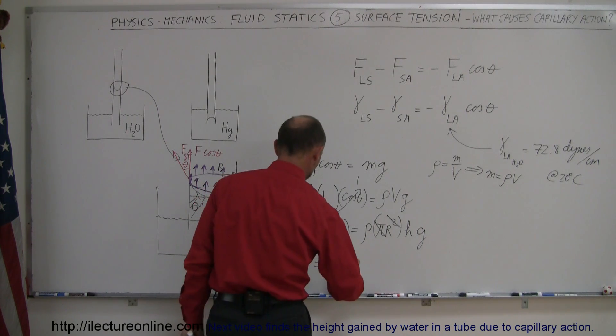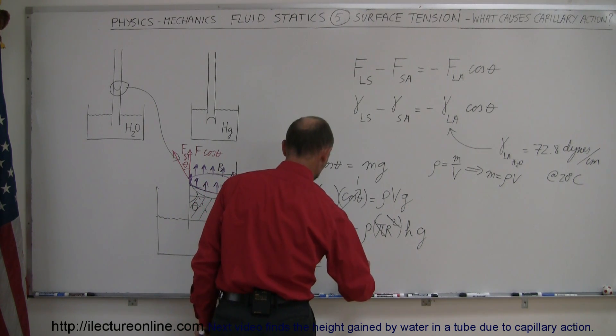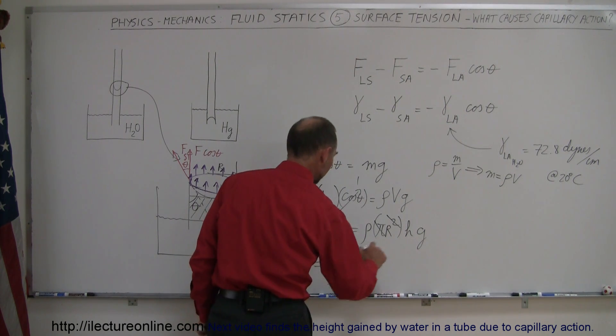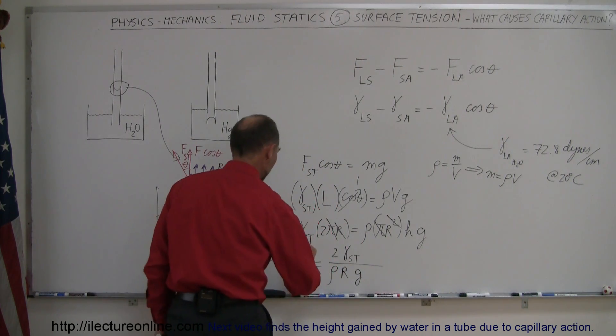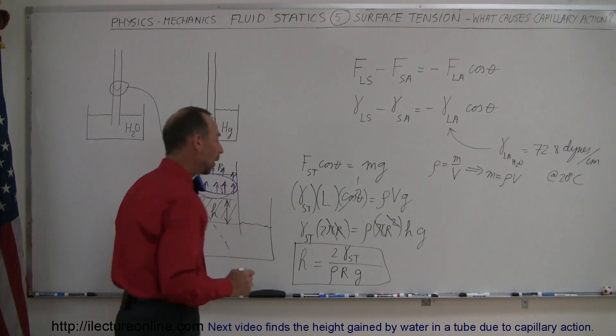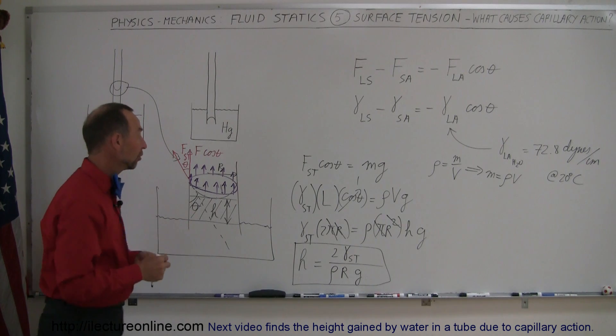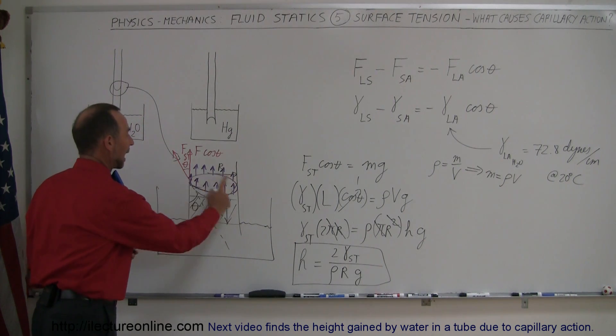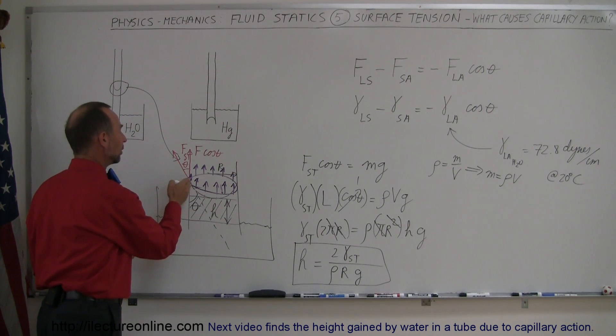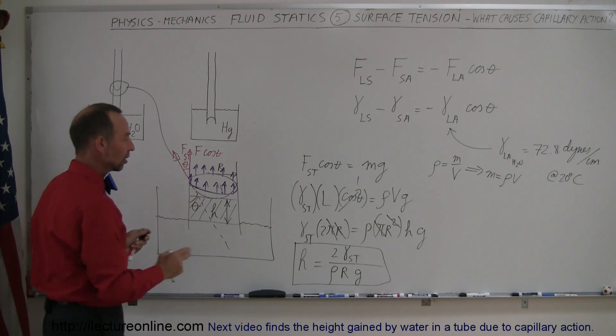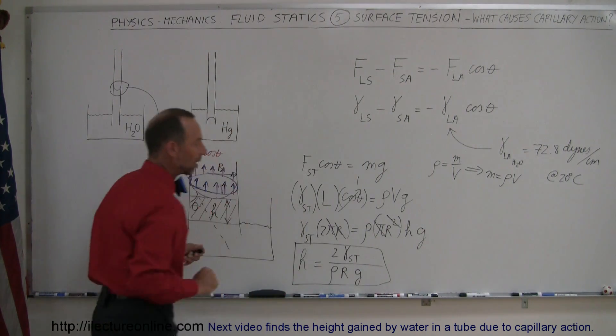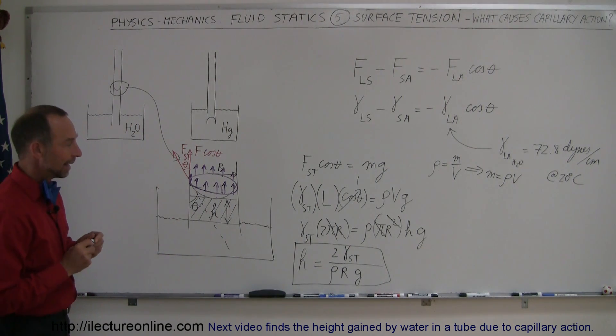we get h is equal to the left side, which is 2 times the surface tension of the water, divided by rho, divided by r, and divided by g. And that will be the height of the water that gets pulled up into the tube because of the action between the water and the edge of the glass, pulling that up. And so we have that surface tension causing this amount of water to rise up and giving it that height.